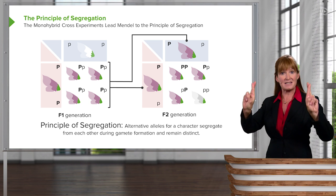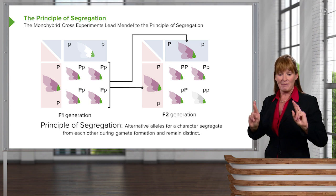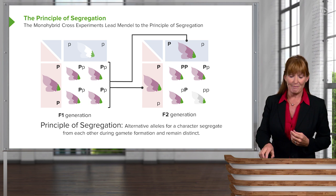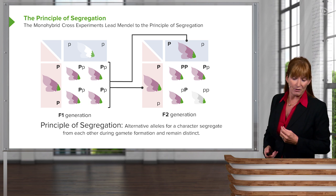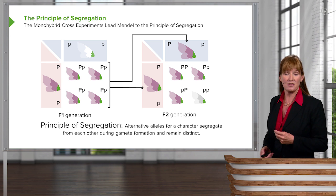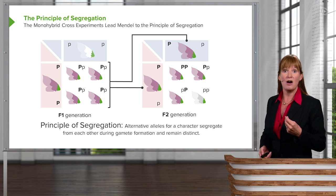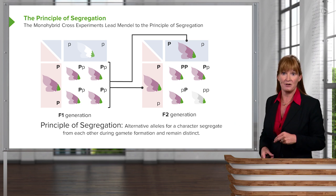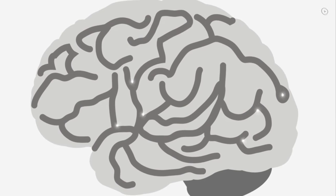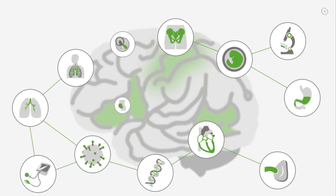This segregation is explained by meiosis in terms of Mendel's factors. So alternate alleles for a particular character segregating from each other during gamete formation really means that homologous chromosomes segregate from each other during meiosis.